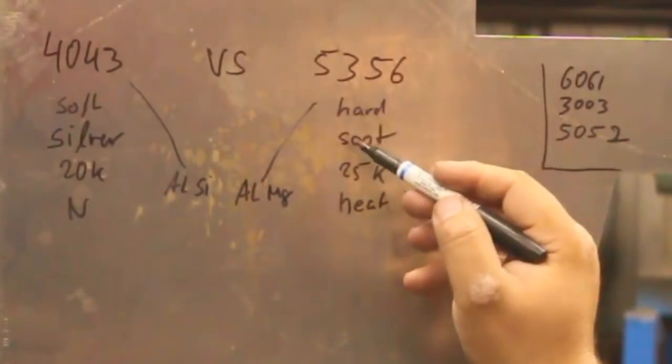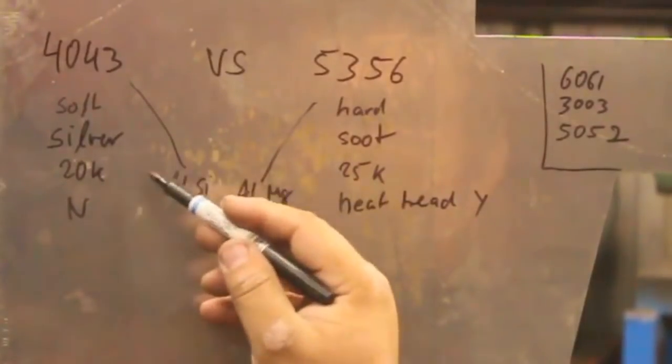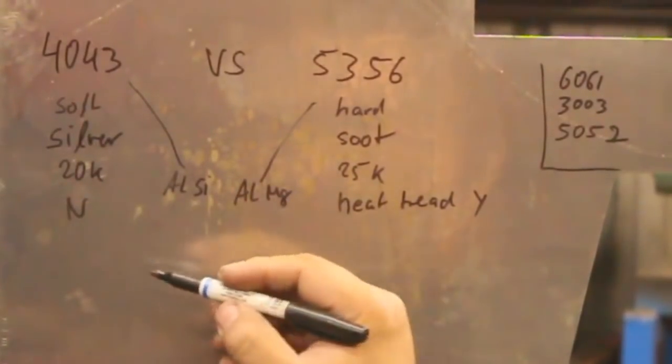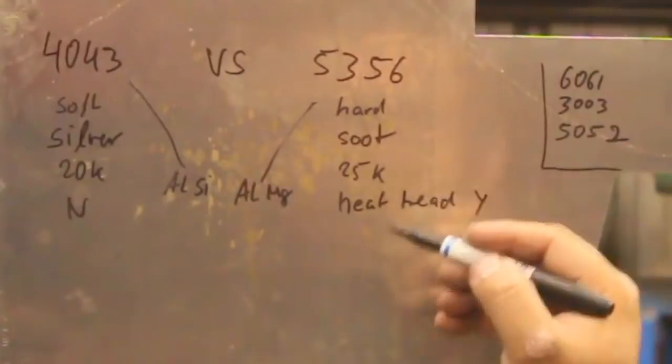That's where the strength comes from. That's where the soot comes from. That makes the wire hard. This is why it's soft. This is why it flows real nice. The silicone promotes the flow, but it's not heat treatable. This one is.